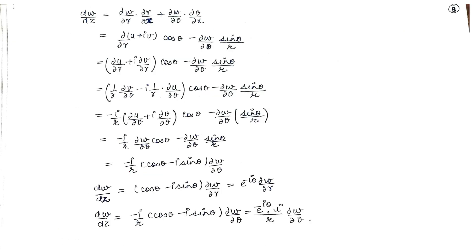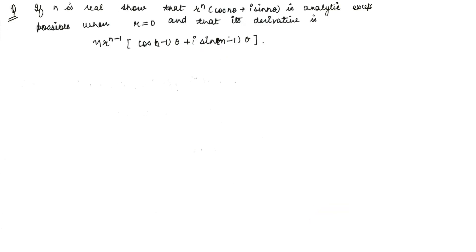For the second formula we differentiate dW/dZ with respect to θ instead: ∂W/∂R·(∂R/∂X) + ∂W/∂θ·(∂θ/∂X), taking ∂/∂R common — (U + IV)·cos θ − (∂W/∂θ)·sin θ/R. Applying the CR equations in polar form again, we arrive at dW/dZ = e^(−iθ)·(i/R)·∂W/∂θ, which is the second formula. These are the two formulas used for derivation.